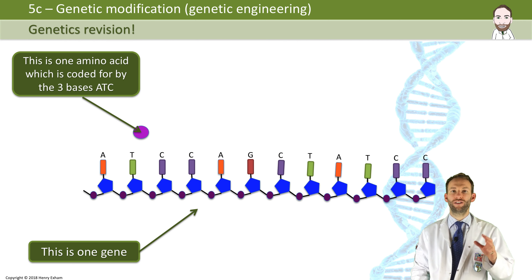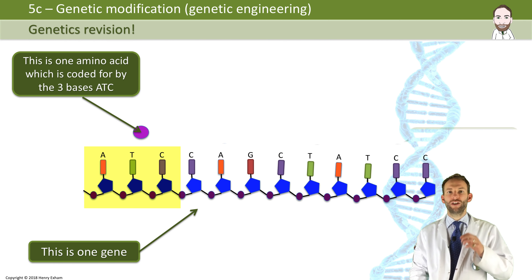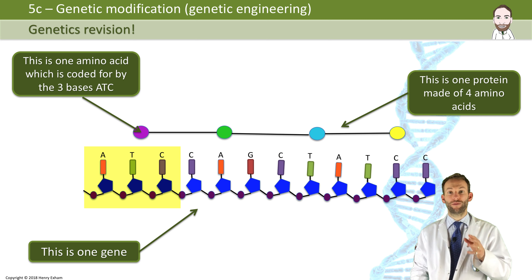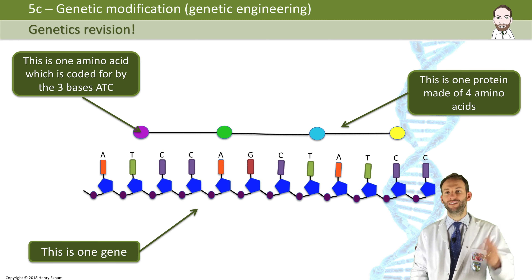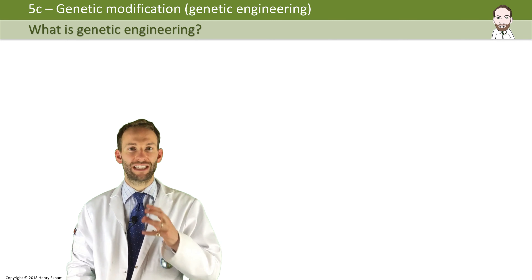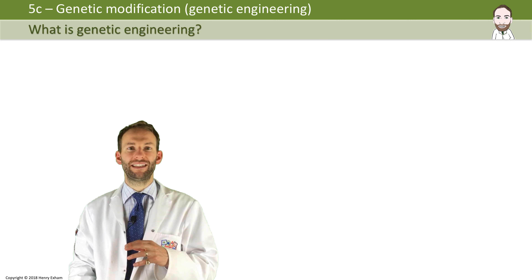You should know already from the course these facts about genetics. A gene is a section of DNA. One gene codes to make one protein. Every three bases on the gene code to make one amino acid. The protein could be an enzyme, a hormone, a structural protein, carrier protein, antibodies — all sorts of things. Proteins build everything that you need. The DNA code is universal — it works the same in every living thing.